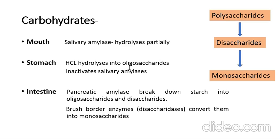Coming to the intestine: pancreatic juice contains pancreatic amylase, which is the carbohydrate-splitting enzyme. Bile is also present but has no role in carbohydrate digestion. In the intestine, all the polysaccharides are broken down into oligosaccharides and then into disaccharides.